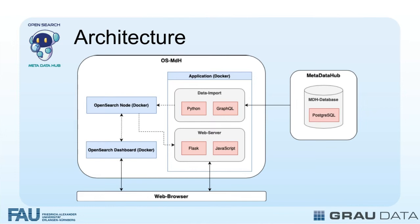By automating this process, we ensure that the data remains up-to-date and readily available for users. The web server component acts as the front-end interface between the user and the data stored in the OpenSearch node. It runs on the Flask Python framework and utilizes JavaScript to provide dynamic functionality. The OpenSearch Python library and Flask enable data transfer and display on a web browser.